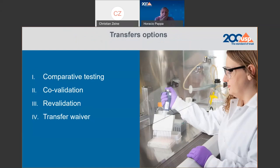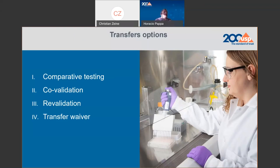Transfer is not an activity that is closely linked to a pharmacopoeial procedure, because if the procedure is in the pharmacopoeia, verification is the appropriate approach. Chapter 1224 was included in the pharmacopoeia to close the loop between all activities related to the generation of analytical data. There are four approaches for transfer: comparative testing, co-validation, revalidation, and transfer waiver.